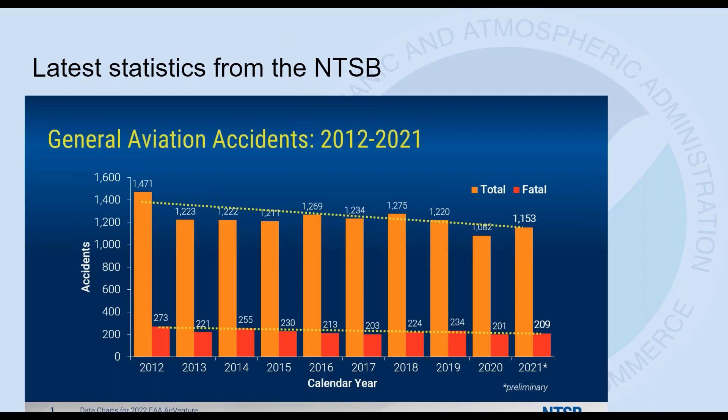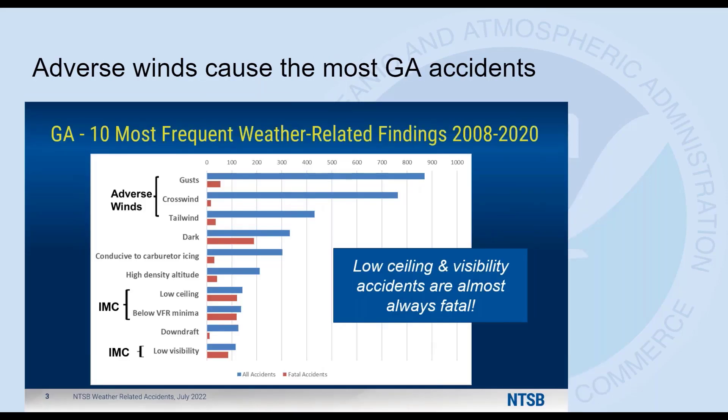First, I wanted to start off with some statistics shared with me from the NTSB. If you were at Oshkosh this year, you would have seen some of these. These are general aviation accident statistics for roughly the last decade, and you can see good news — there's kind of a slow decline in accident size and mortality through 2021. When we look at GA and the most frequent weather-related findings, adverse winds really do cause the vast majority of the accidents — crosswinds, tailwinds, all of those things cause a lot of accidents.